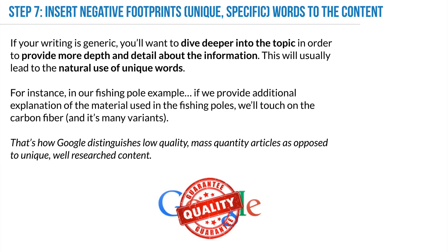Step seven is to dive deeper into the topic and provide more depth and detail. Go back to your content and revisions and just explain more. This will naturally lead to using unique words — if you're explaining the material of a fishing rod in more depth, you'll have to use words the other articles aren't using, and that's going to make you rank above them. For the fishing pole example, diving into carbon fiber construction and analysis of variance is how Google distinguishes low-quality mass articles from well-researched content.